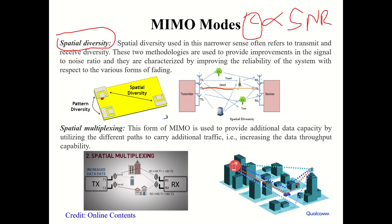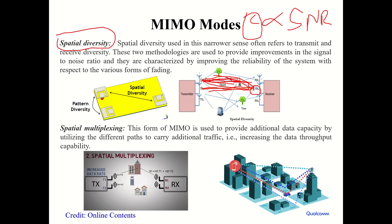In spatial diversity, multiple transmitting and receiving antennas are used. You have a direct signal from TX1 to RX1, TX2 to RX2, and also multipath signals bouncing off trees and buildings. You can either send different data on different paths to enhance capacity, or send the same data on both channels and use Maximal Ratio Combining to select whichever has better SNR — this is a well-known technique from communication theory for combating fading.